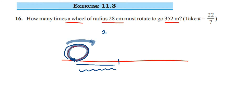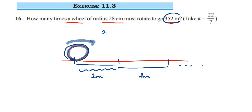Starting from one point to the next point, it is the same measurement. Suppose it is covering 2 meters in one rotation — in the second rotation it will cover another 2 meters, and so on. They are asking how many times it has to rotate to cover 352 meters.